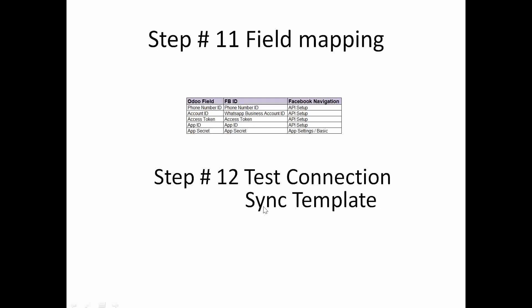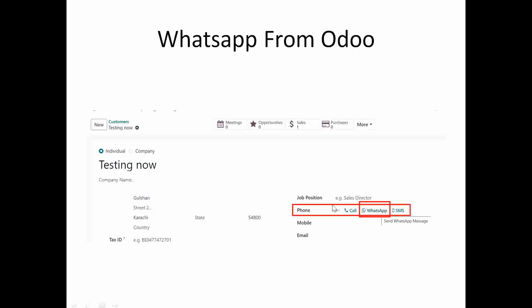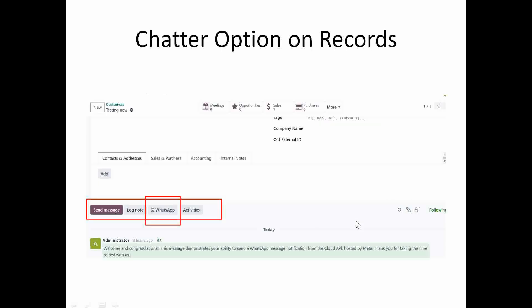Once you have provided all these details, save the record, click Test Connection, and then Sync Template. Once these are done, you are good to go. For example, on a customer record you will also have a WhatsApp option on the chatter page, so you can send any message or document via WhatsApp using that button. This is basically the simple way to configure WhatsApp in Odoo. If you have any questions, you can DM me. Thank you so much.